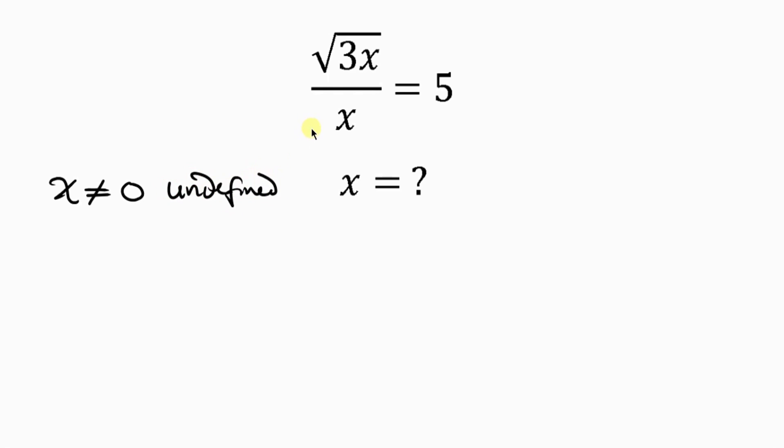Now, how do we solve this? Our first step will be to cross-multiply. So, we have to use this x here to multiply the 5, so that we have the square root of 3x to be equal to x times 5, which is 5x.